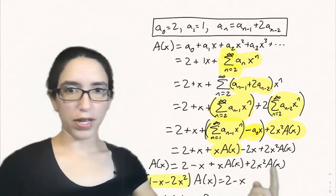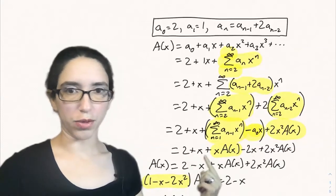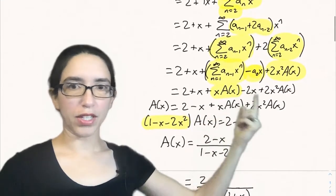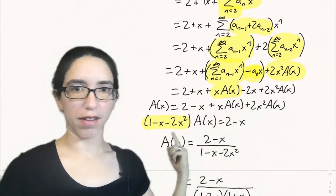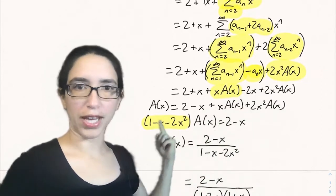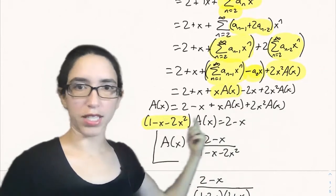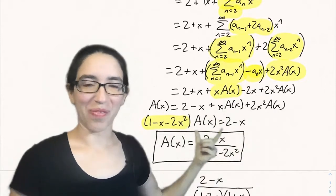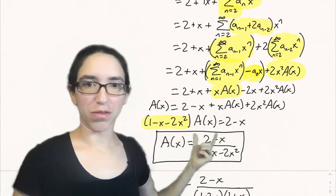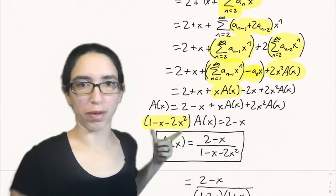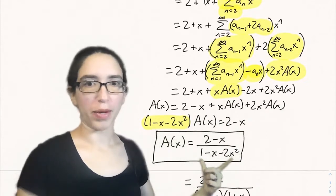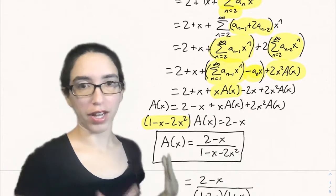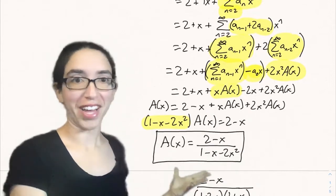Simplifying: 2 plus x minus 2x gives 2 minus x. Now we can solve for a(x) by putting all the a(x) terms on the left. We get a(x) minus x·a(x) minus 2x²·a(x), and solving by dividing both sides by 1 minus x minus 2x² gives a(x) equals (2 minus x) over (1 minus x minus 2x²) as a closed formula for a(x).